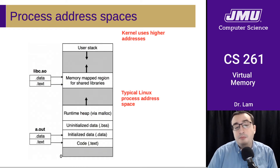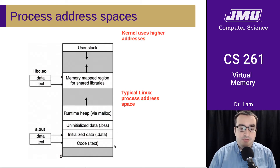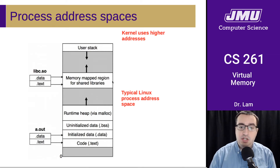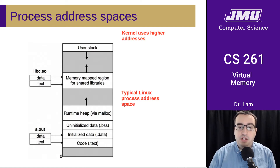Here's a more sophisticated picture of what a process address space looks like. You can see the data regions and the code region we've been talking about before. We have the heap, which grows upwards in memory. We have the stack, which grows downwards in memory. And now we can see there is this memory-mapped region in between for shared libraries. The kernel also reserves the higher address spaces in memory for its own purposes.